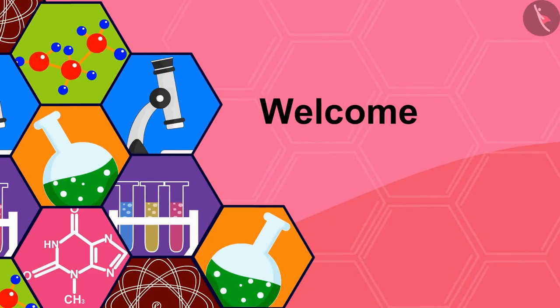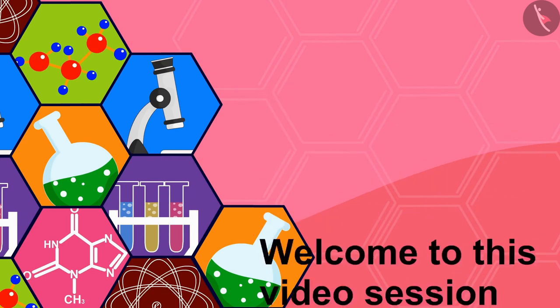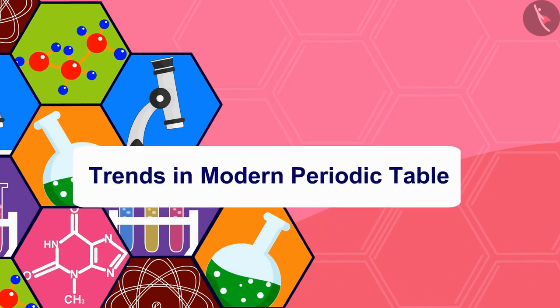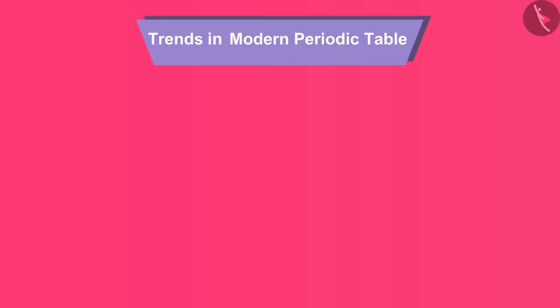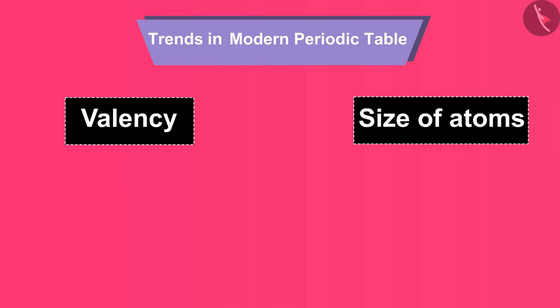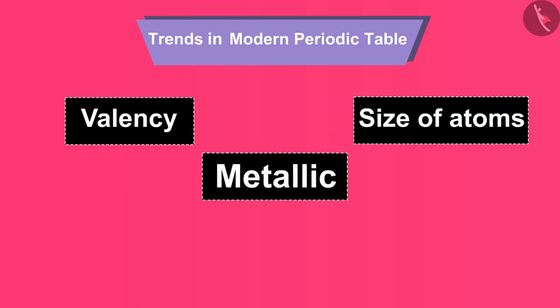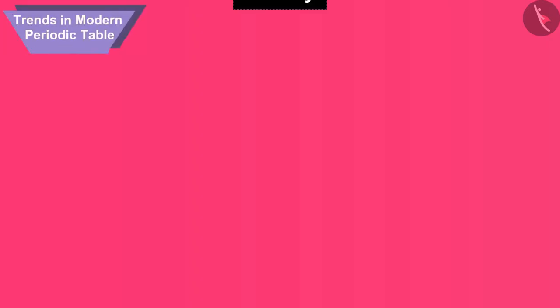Hello friends, welcome to this video session. The topic we are going to cover in this session is Trends in Modern Periodic Table. We will discuss various trends about valency, size of atoms, and metallic and non-metallic properties one by one across the period and down the group. Let us first begin with the trend of valency.